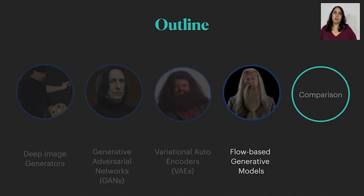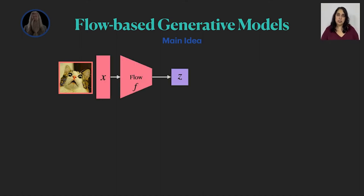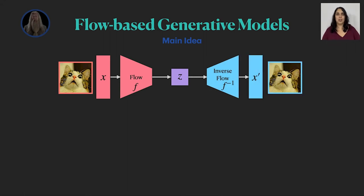The last family we're going to talk about are flow-based generative models with a didactic professor. The architecture of flow-based models resembles the one of variational autoencoders, but it has some fundamental changes. So we still have an image x that is being encoded into a latent space z, that is normally distributed, and decoded back to another image x tag.